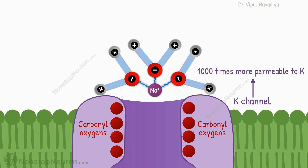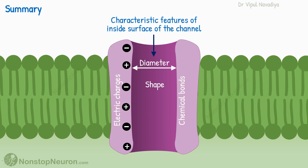So this is all about the selective permeability of channels. Note that I have explained concepts in a simplified and schematic way. Selectivity to other ions like calcium and chloride are also determined by such intricacies of channel structure. Having this much idea is enough to know why different channels are more selective to certain ions only. In summary, the selectivity of a channel is determined by the diameter and shape of the pore, and electrical charges and chemical bonds along the inside surface.